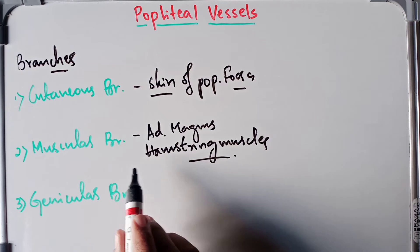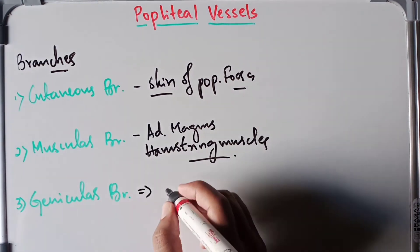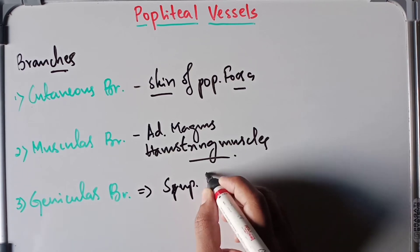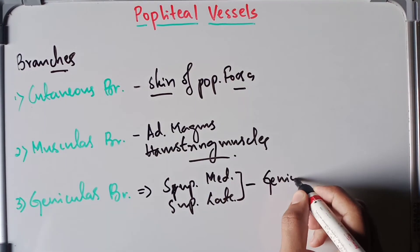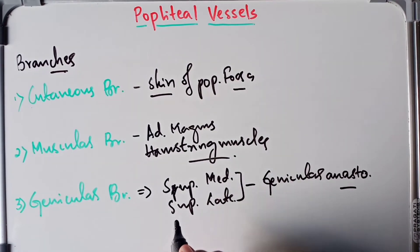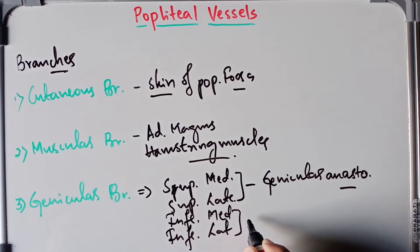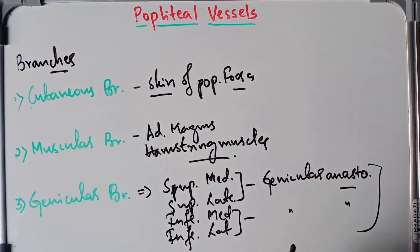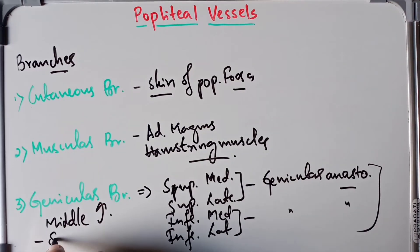The popliteal artery gives separate muscular branches to the adductor magnus and hamstring muscles. When it comes to the genicular branches, it gives off the superior medial and superior lateral genicular arteries, which take part in the genicular anastomosis around the knee joint. It also gives the inferior medial and inferior lateral genicular arteries, which also contribute to the genicular anastomosis. Finally, there is the middle genicular artery, which supplies the synovial membrane of the knee joint.